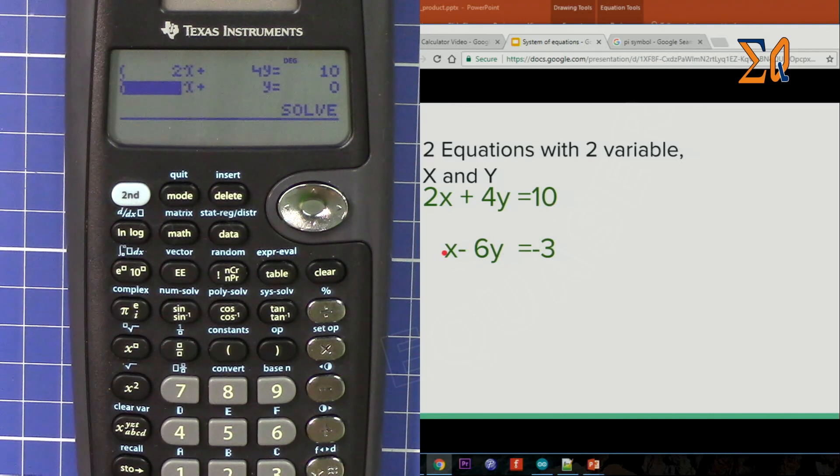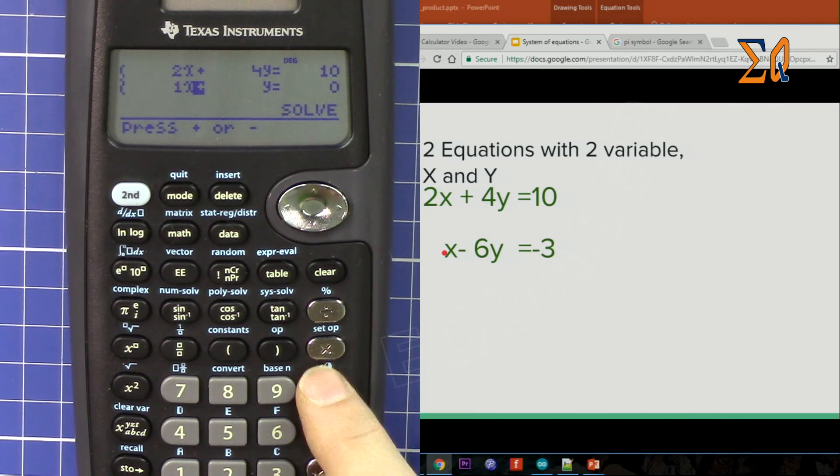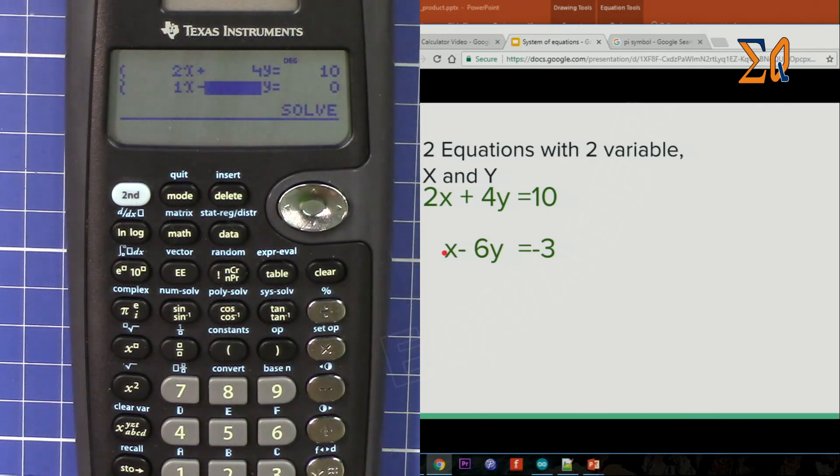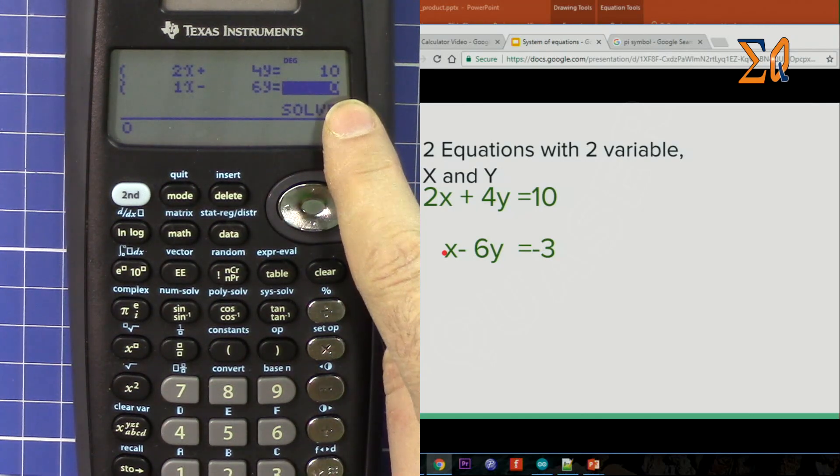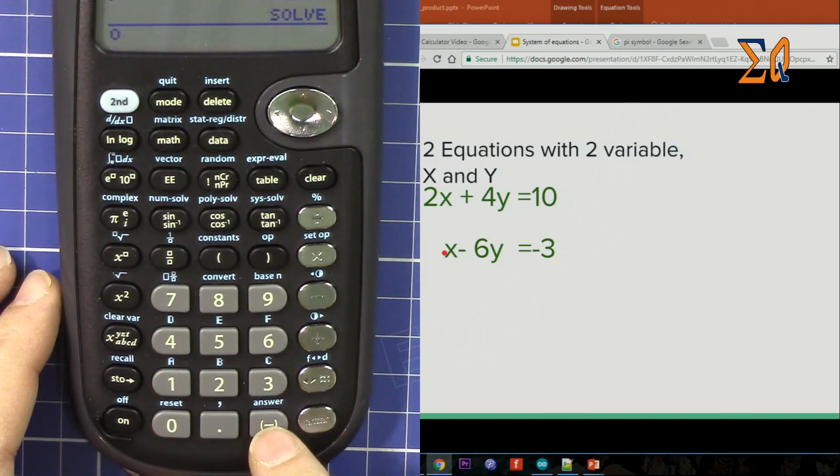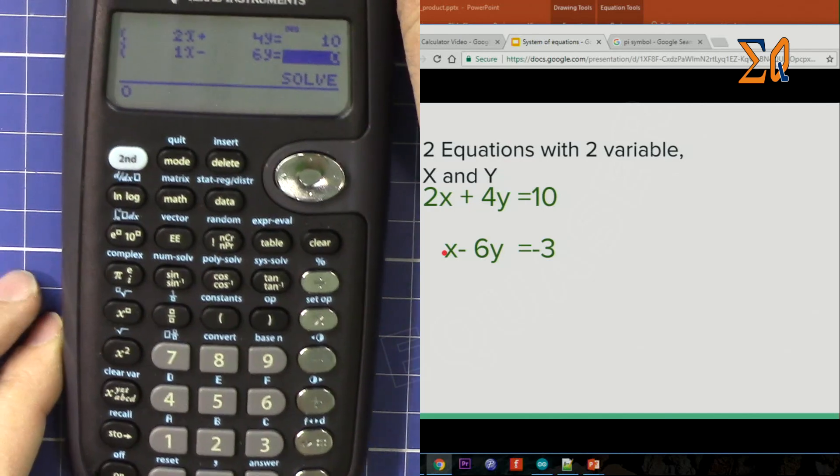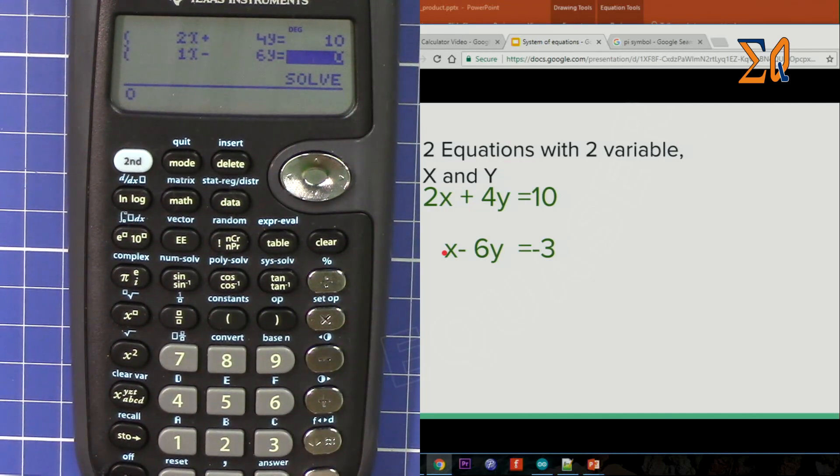Now the cursor moves here. The coefficient of x is 1, plus 1. And here I am pressing this minus. The cursor moves here, 6. Now for this one I'm pressing this minus. Make sure that you press that.